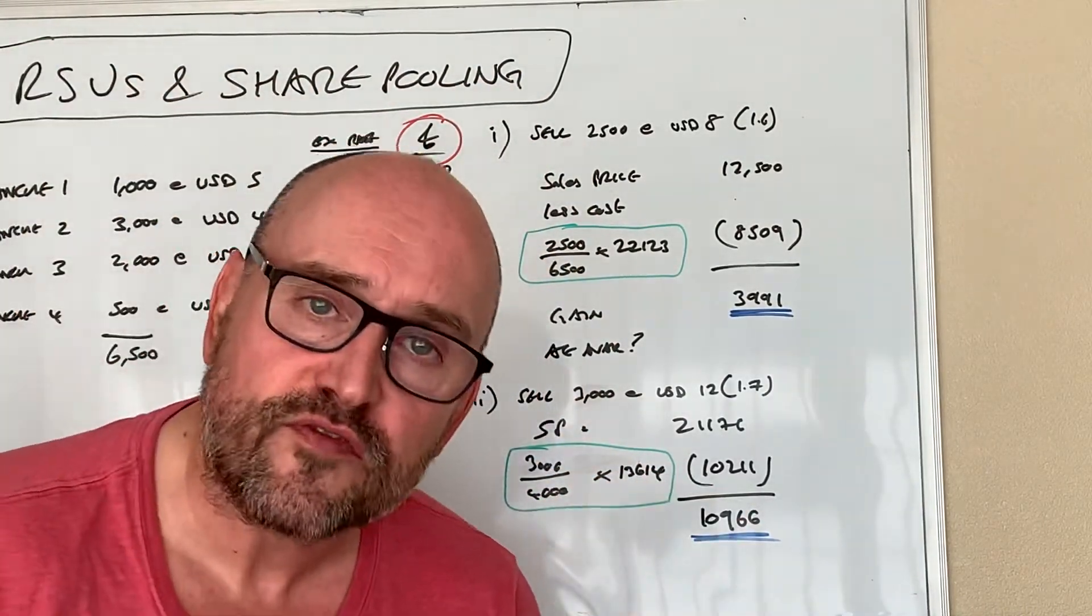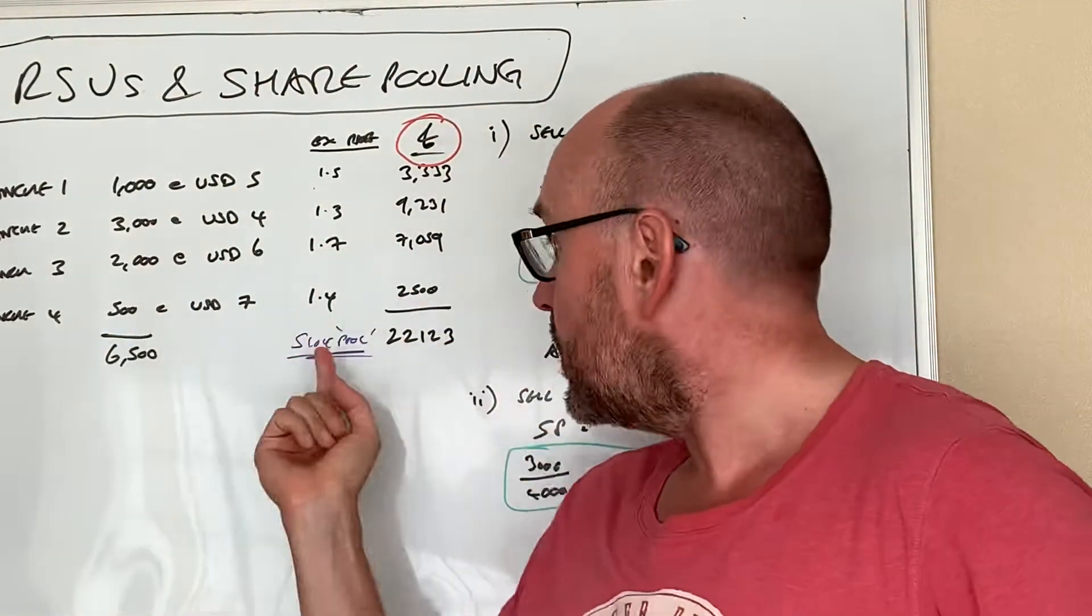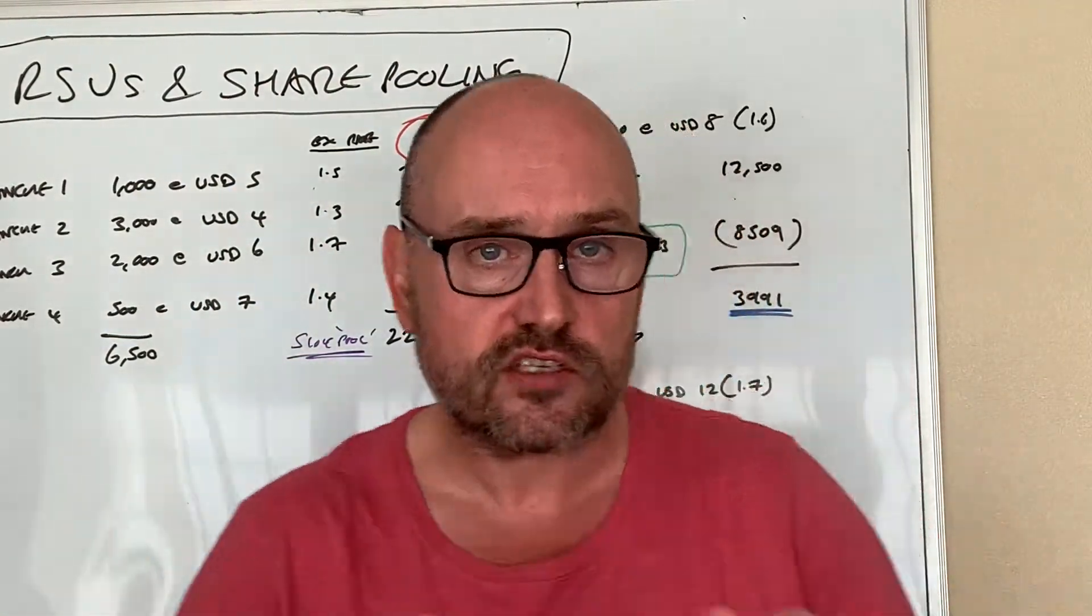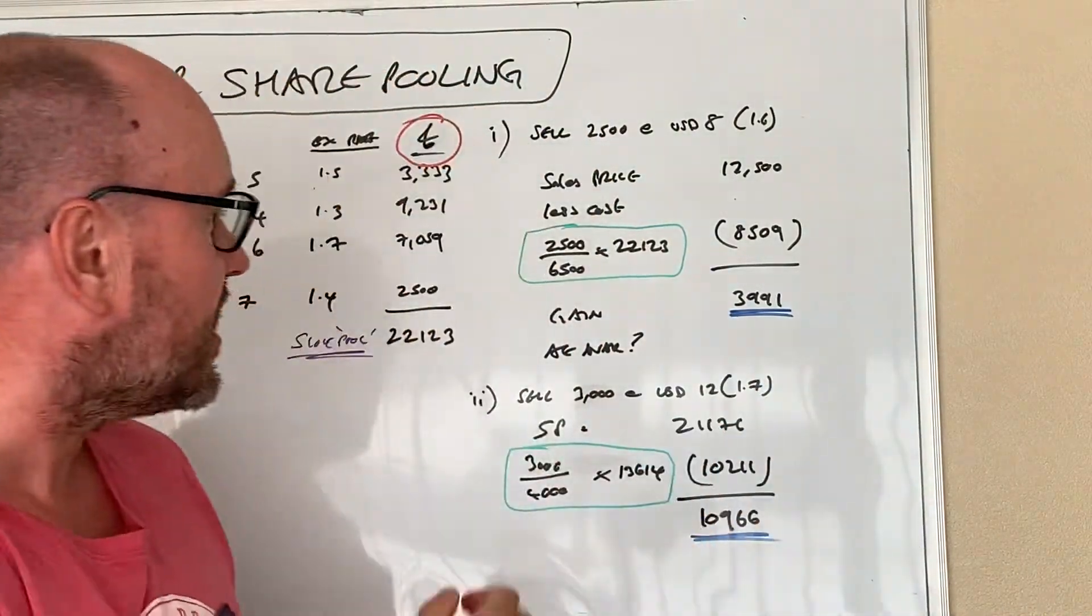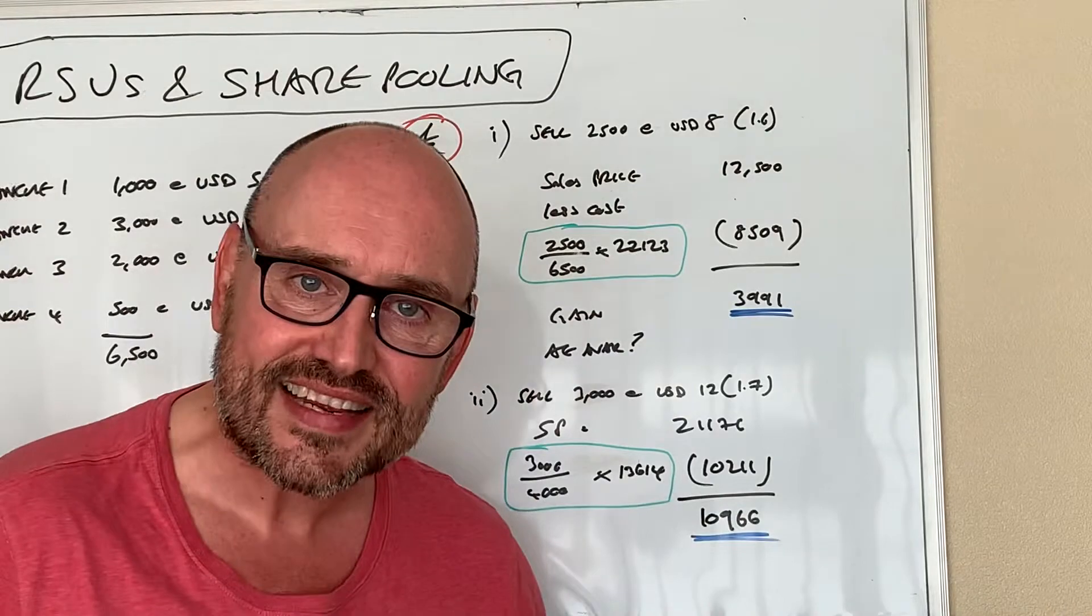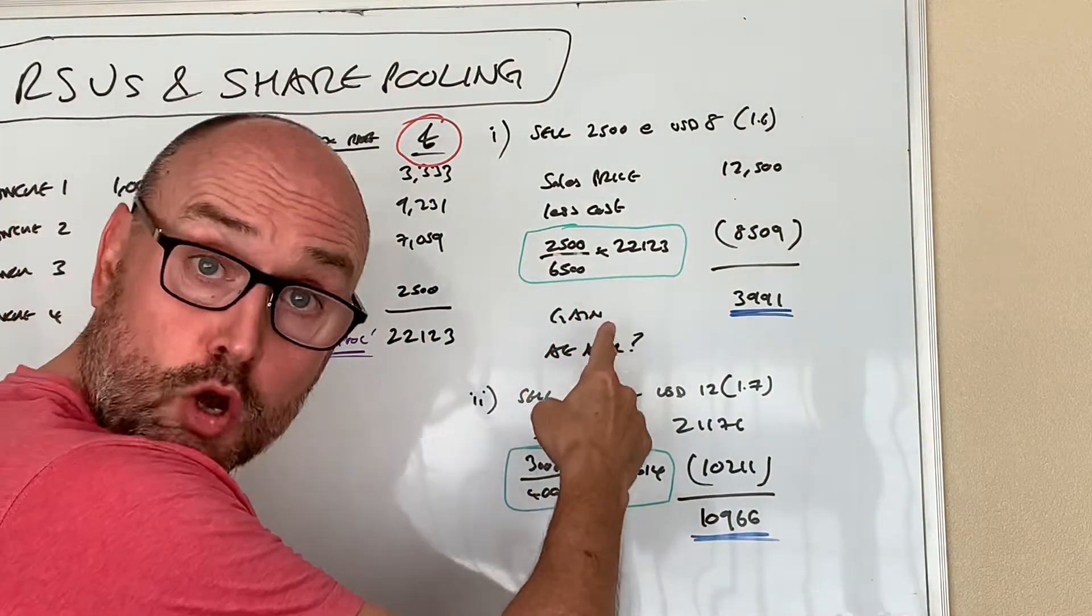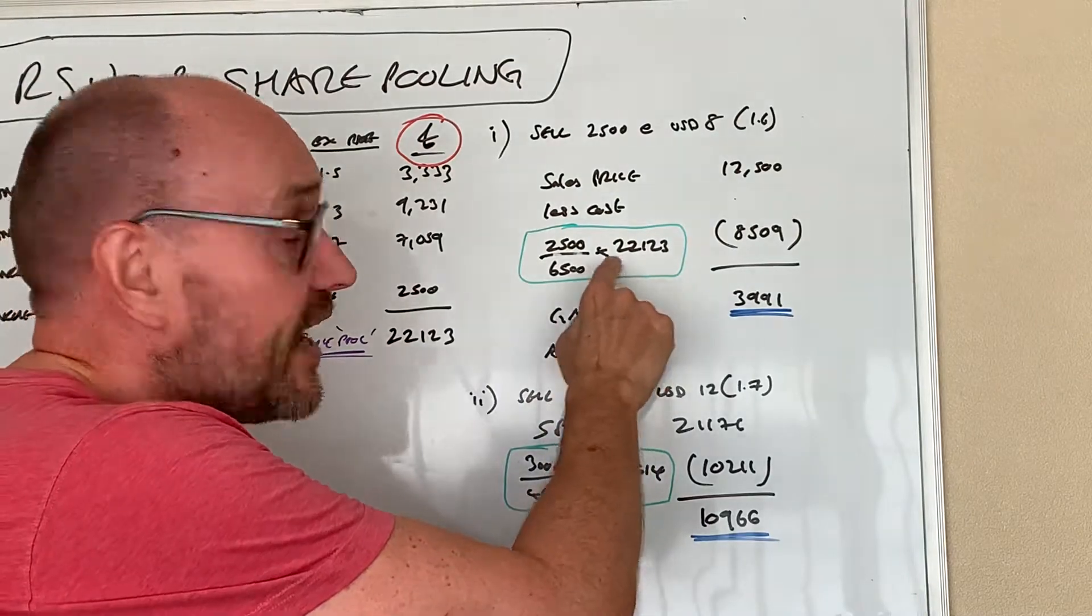He's offloaded two thousand five hundred shares, but in total in his pool he's got six thousand five hundred shares. So the first bit of the calculation is to say, well, two thousand five hundred divided by six thousand five hundred, so that's the bit he's got rid of divided by the total that he has times by the pool amount.